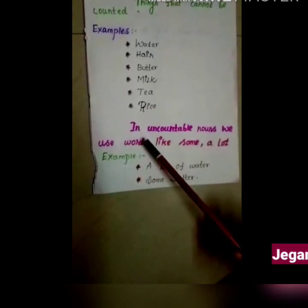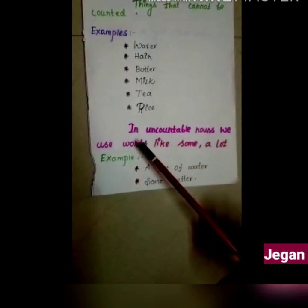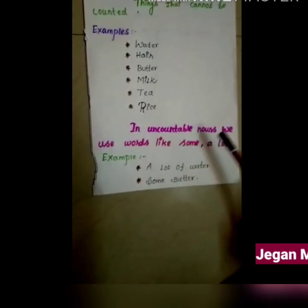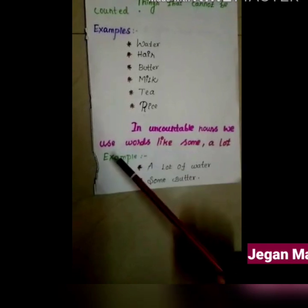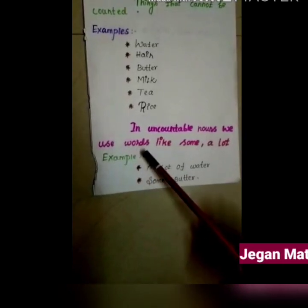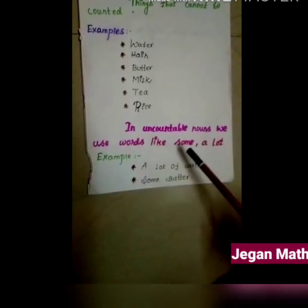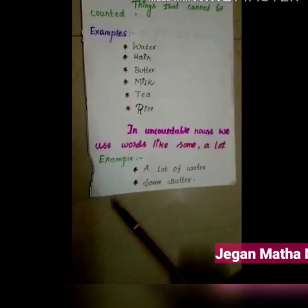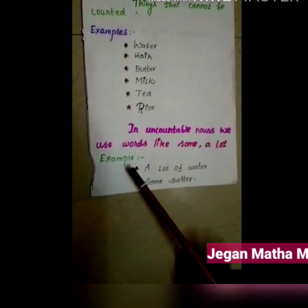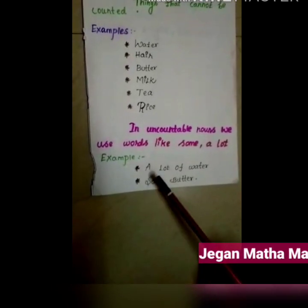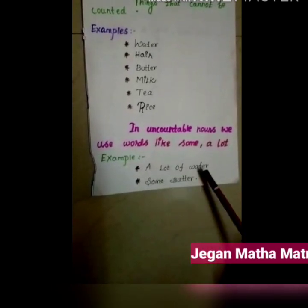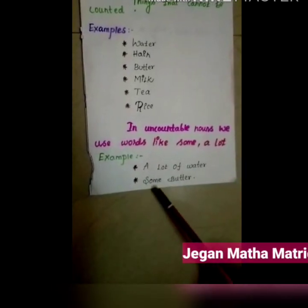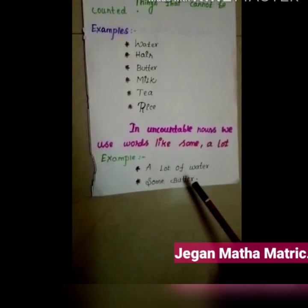In uncountable nouns, we use words like 'some' and 'a lot.' Examples: a lot of water, some butter.